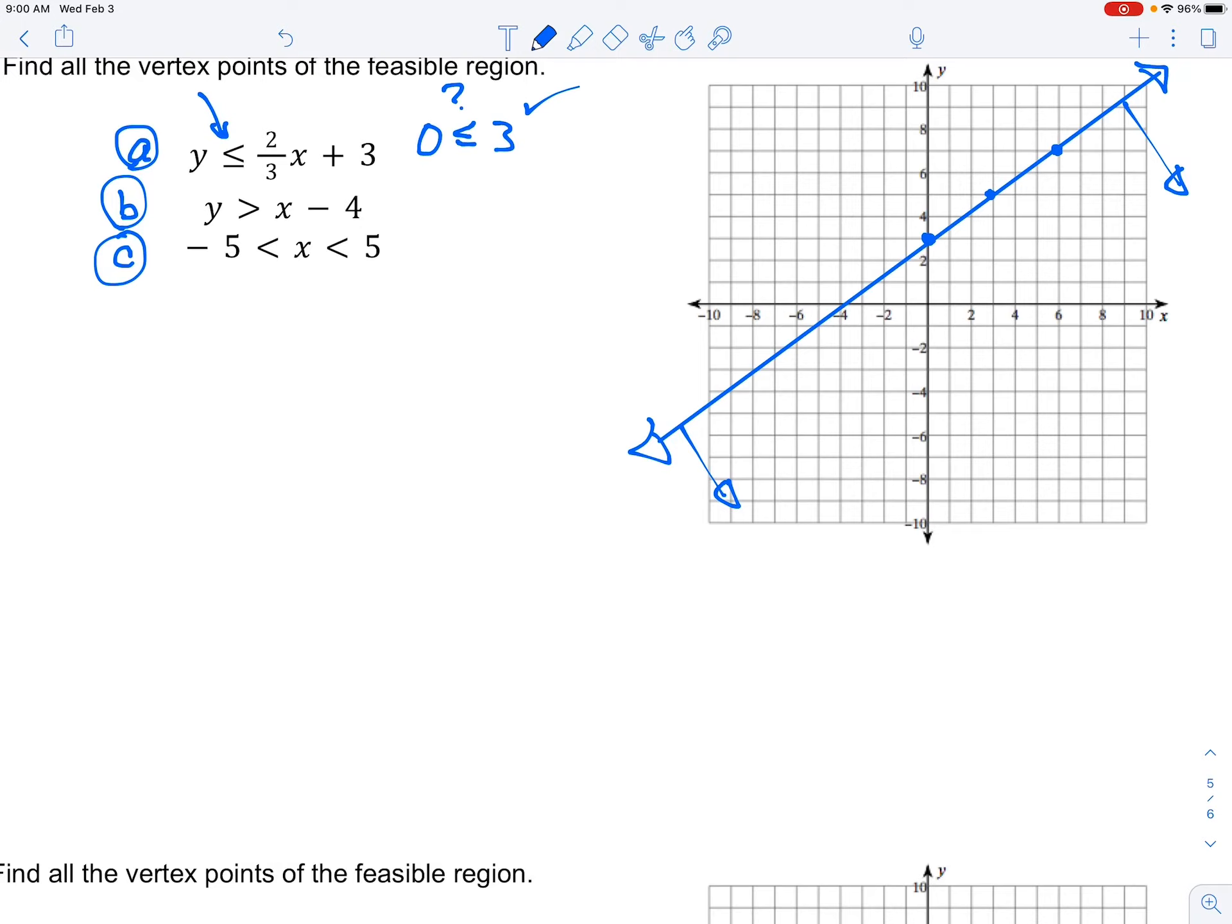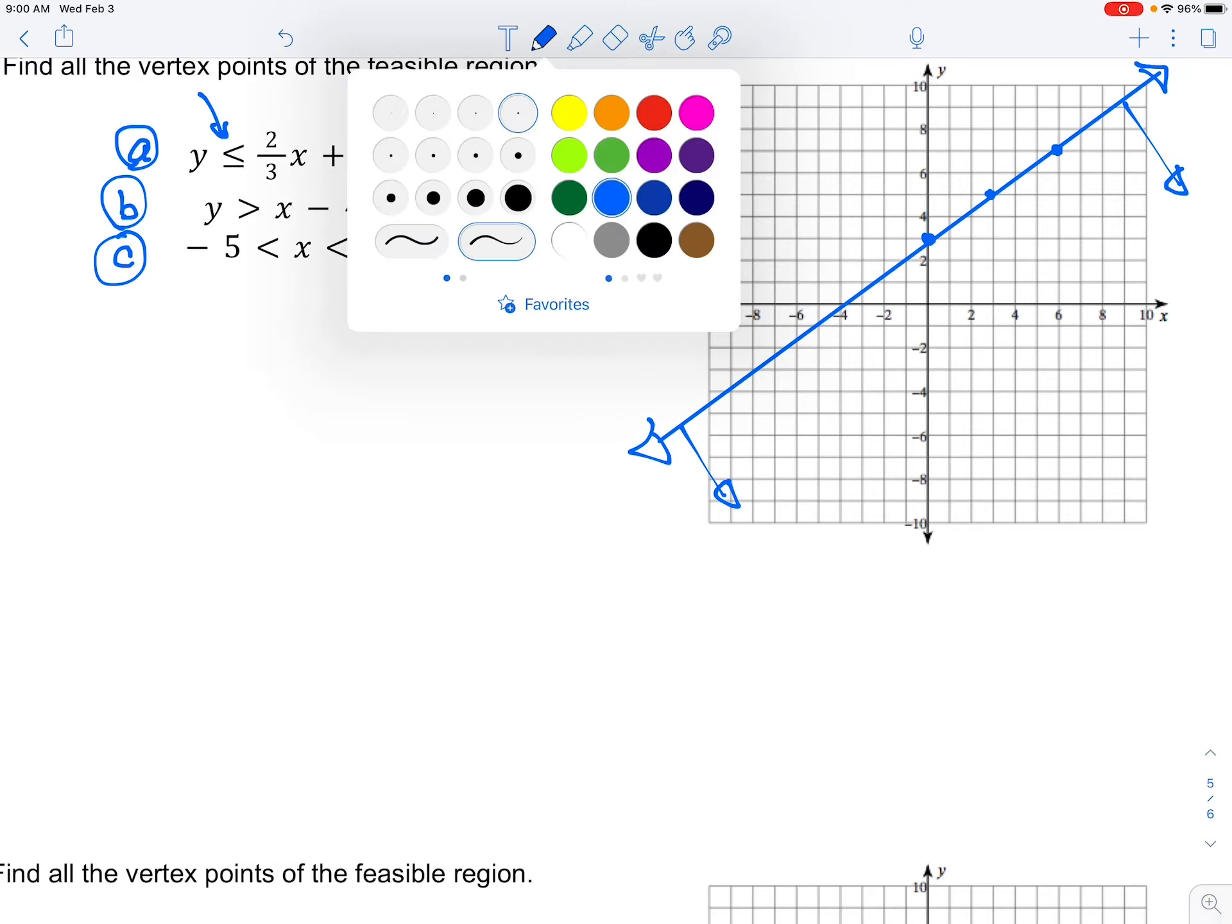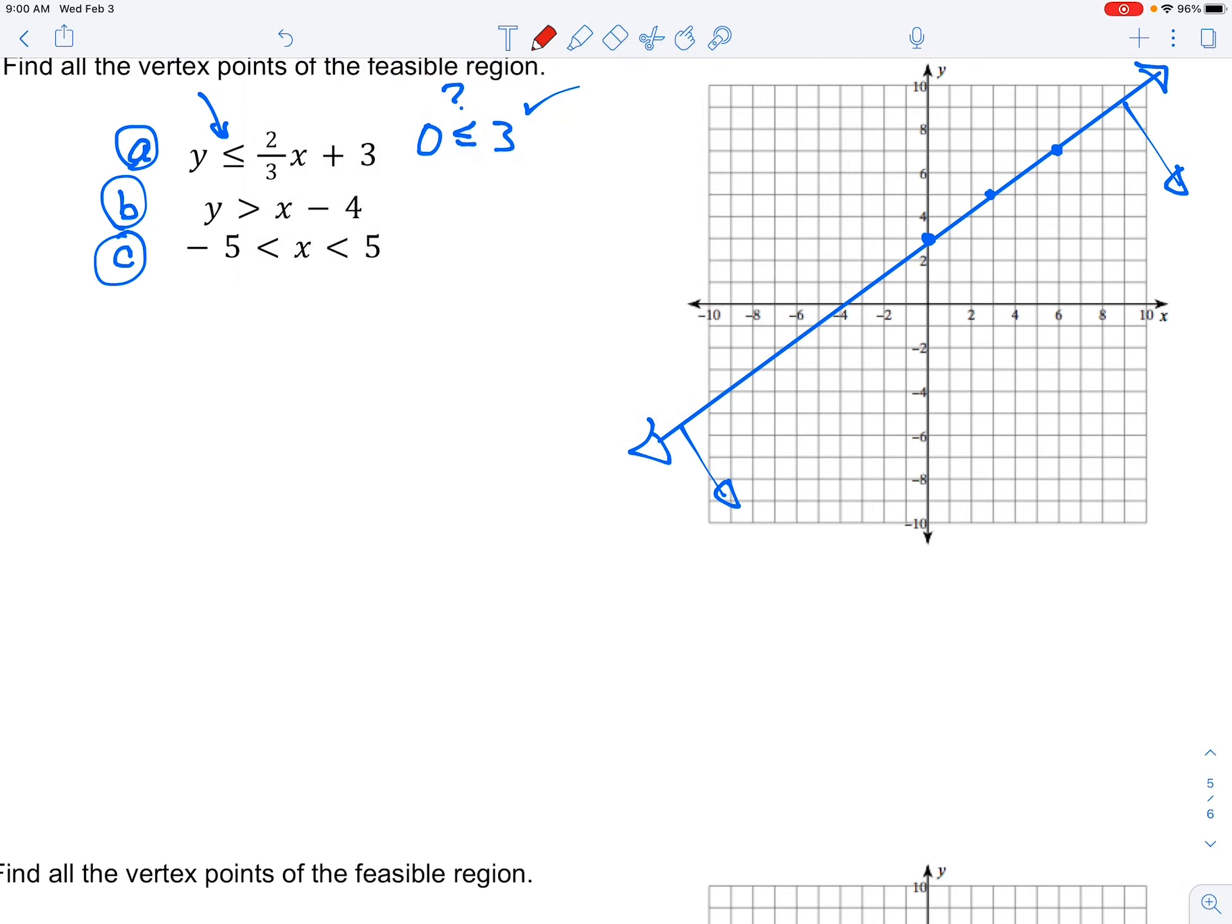All right, line B, Y is greater than X minus 4. Same style here. We've got a Y intercept of negative 4 and a slope of 1, 1 over 1 up. So it's rising. And that is going to be, let's see, I'll draw it in here. Here is that line.